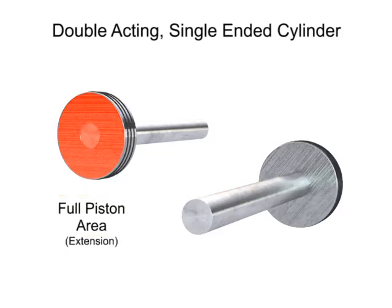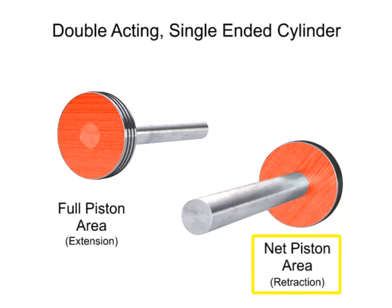The next significant working area is called the net area. This area is the size of the full piston area, minus the area of the rod. The net area feels pressure when the cylinder retracts.